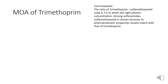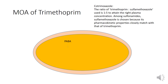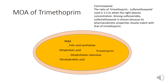Now we will see the mechanism of action of trimethoprim. In the bacteria, PABA is converted into dihydrofolic acid in the presence of the enzyme folic acid synthetase. This dihydrofolic acid is further converted into tetrahydrofolic acid in the presence of the enzyme dihydrofolate reductase. Our drug, trimethoprim, inhibits dihydrofolate reductase, and ultimately this leads to cell injury. This is how trimethoprim acts.